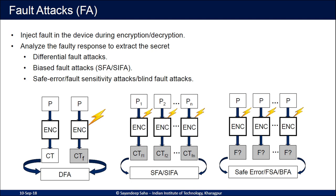Injecting a fault in a device during encryption or decryption and analyzing the faulty response gives you the secret. There are several ways to perform a fault analysis attack. The most popular one is the differential fault attack, where the adversary encrypts the same plaintext twice — once with a fault, once without — and analyzes the differential between the correct and faulty ciphertext to extract the secret. Only a few faulty ciphertexts are required; in some cases, a single faulty ciphertext suffices. The assumption over the fault is very minimal — just a single byte or maybe a multi-byte fault to extract the key even from ciphers like AES.